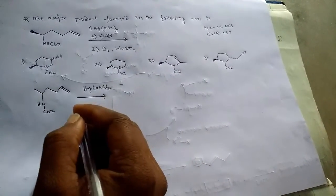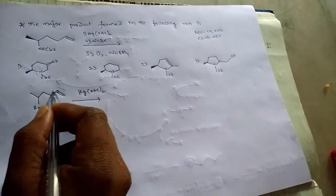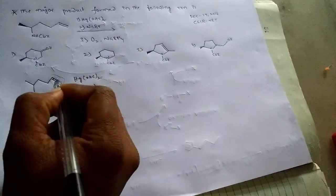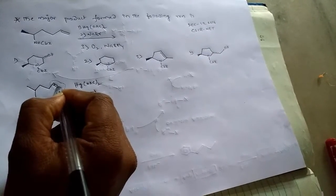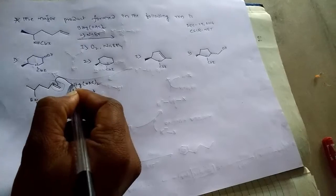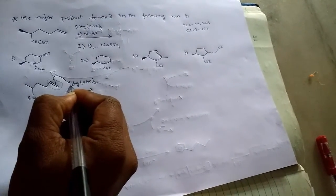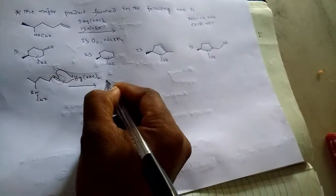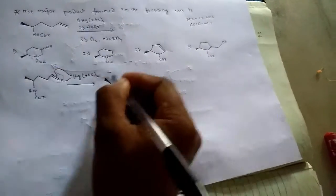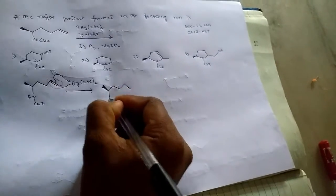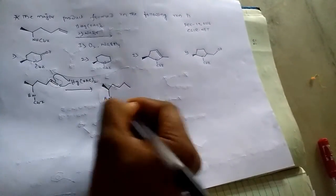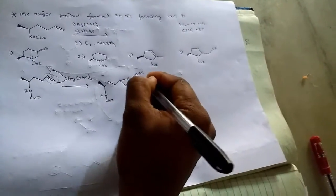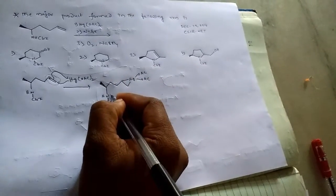So, when mercuric acetate reacts with this alkenic molecule, always this alkenic molecule acts as nucleophile. So that's why it gives its electrons to mercury and from the mercury, it abstracts. Okay, and then,